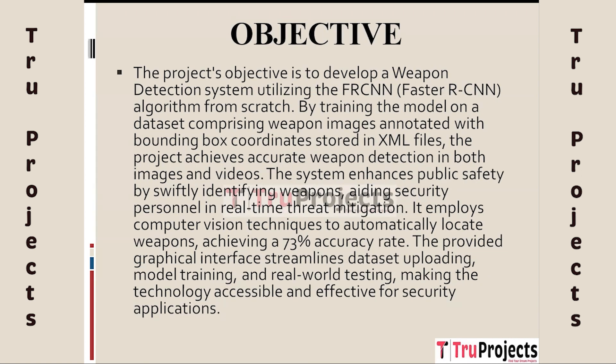The objective of the project is to create a weapon detection system from scratch using the Faster RCNN algorithm. The project performs precise weapon detection in both photos and videos by training the model using a dataset made up of weapon images tagged with bounding box coordinates contained in XML files. By quickly identifying weapons and assisting security professionals in avoiding threats in real time, the system improves public safety and uses computer vision techniques to automatically locate five types of firearms.